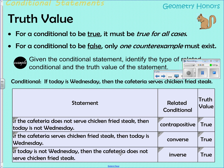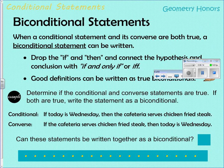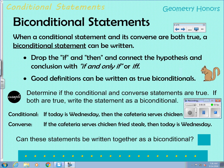Those are the truth values for conditional statements and the three related conditional statements. When all statements are true — particularly the conditional and converse — we can write the statement as a biconditional statement, meaning it is reversible and can go both directions. To write a biconditional, we drop the 'if' and 'then' and connect the hypothesis and conclusion with 'if and only if.' Good definitions can be written as true biconditional statements.